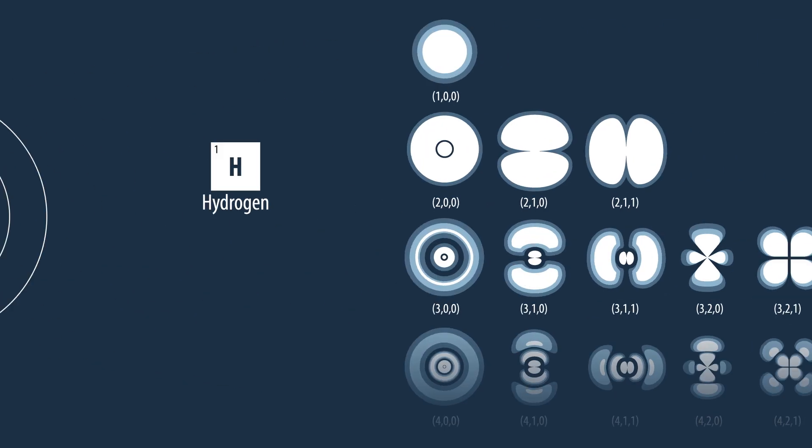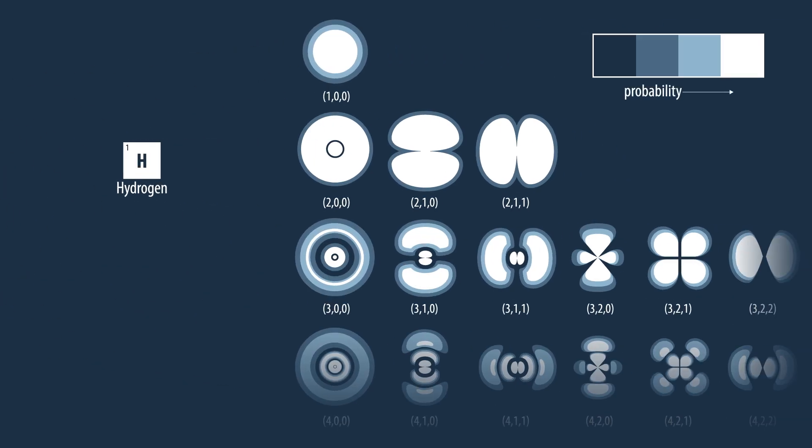However, the electrons' positions are far less certain than that. Instead of set orbits, we now understand there to be set atomic orbitals.